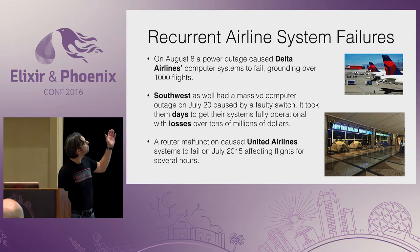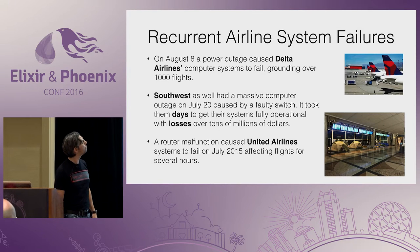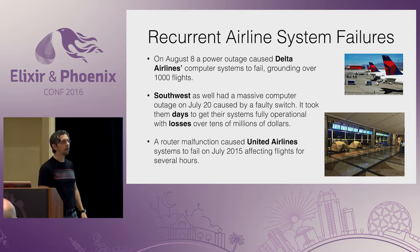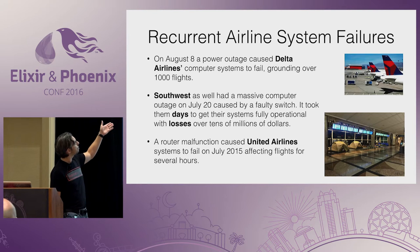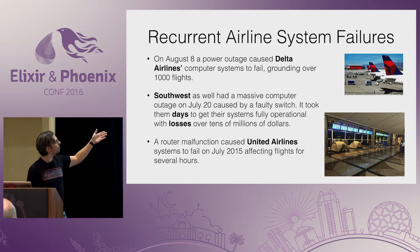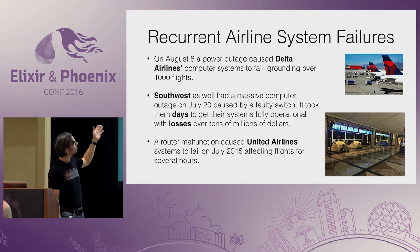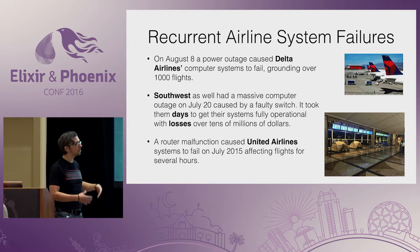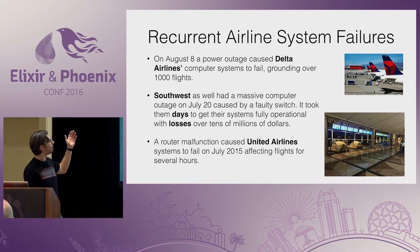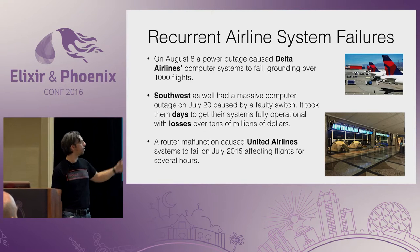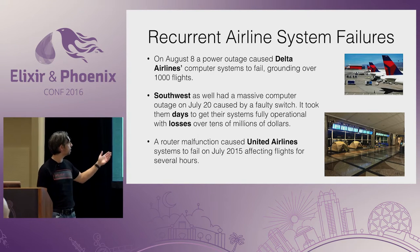Just last month, there were a few instances — for example, Delta Airlines' computer system failed and they grounded over 1,000 flights. Just a few weeks earlier, Southwest had a faulty switch that took their system down; it took them days to get operational again and they lost tens of millions of dollars. A year ago, United Airlines had a similar problem with a faulty router and it also affected tons of flights.